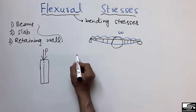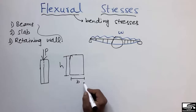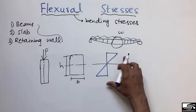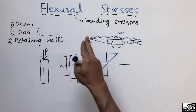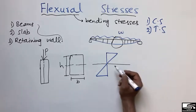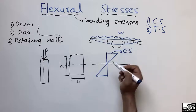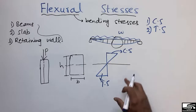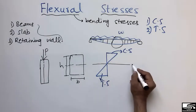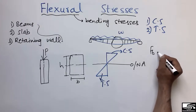If we consider the cross-section of the beam — where the depth of the beam is h and the width is b — we can draw a stress diagram. The flexure stresses are classified into two types: compressive stresses and tensile stresses. The beam will be subjected to compressive stresses at the top and tension stresses at the bottom. At the neutral axis, we have zero stresses; this line is called the neutral axis.